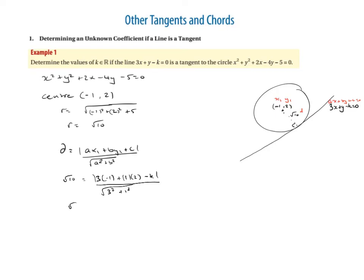Putting in everything, we have √10 = |3(-1) + 1(2) + (-k)| / √(3² + 1²). Tidying up: √10 = |-3 + 2 - k| / √(9 + 1) = |-1 - k| / √10. Multiplying both sides by √10 gives 10 = |-1 - k|.